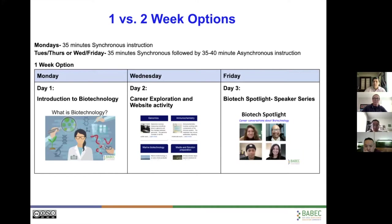Depending on how much time you have — Don mentioned it is a difficult time right now to teach remotely — I've given you two ways that you can do this. There is a one-week option. Working with Don, the way we've set up the curriculum is that the first day of the week, or Monday, is 35 minutes of synchronous learning. Then your Wednesday-Friday block or Tuesday-Thursday block is 35 minutes of synchronous, followed by 35 to 40 minutes of asynchronous learning. Each school might be doing something a little bit different, but in general that's how the lessons and the resources are arranged.